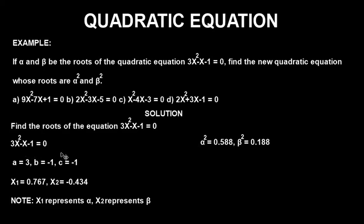After doing that, you find the coefficients of the equation. The coefficient of the first term 3x² is 3, so a = 3. For those who may not know, a coefficient in mathematics refers to a number or value behind a variable or unknown. So the coefficient of −x is −1, meaning b = −1, and the constant is also −1, so c = −1.